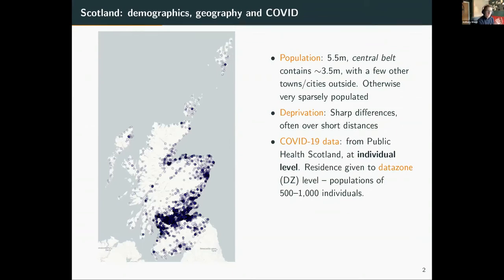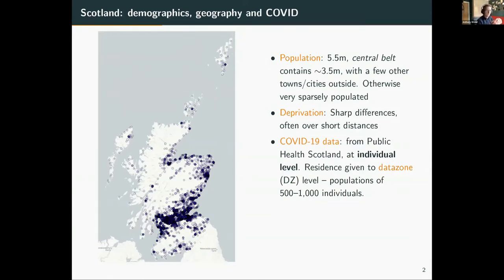With regards to our COVID-19 data, we get a slightly different stream of data from Public Health Scotland. Importantly, this is given at the individual level - for each individual vaccination or individual test result (positive or negative), we get an age range within a five-year window, whether it's male or female, and most importantly their data zone. A data zone is a census area that bounds the population to pockets of 500 to 1000 individuals, and Scotland has of order 7000 of these data zones.